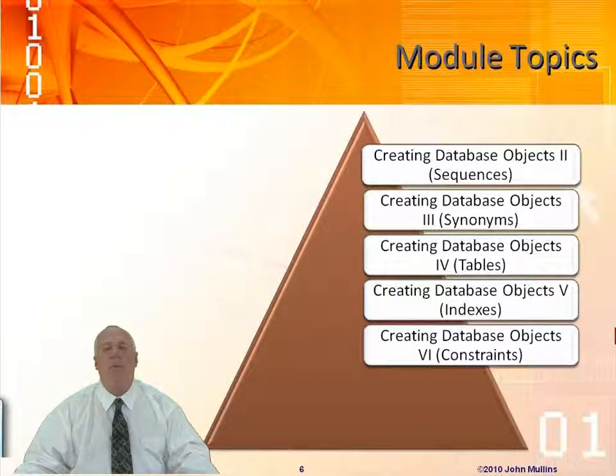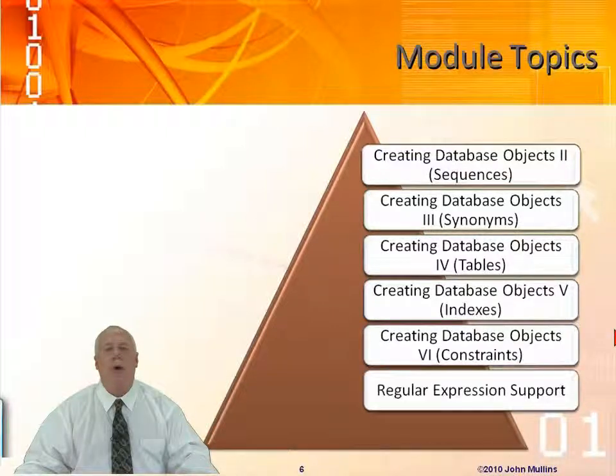A couple of other object types we'll be looking at here. We'll be looking at creating constraints. Primary keys and foreign keys, for example. The constraints help us maintain the referential integrity of our data. They want to make sure that we're not putting people in invalid departments or we're not removing departments that we still have employees in. The constraints will help us avoid those types of issues or errors that we might encounter along the way.